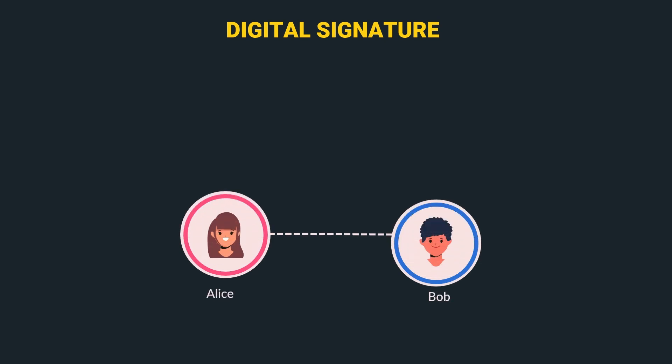Let's start with the first one, which is digital signature. Let's understand using some graphics. Before moving forward, I want to tell you about the color coding scheme we will be using in the graphics to make them easy to understand. Objects surrounded by a pink border will be related to Alice, and those surrounded by a blue border will be related to Bob.